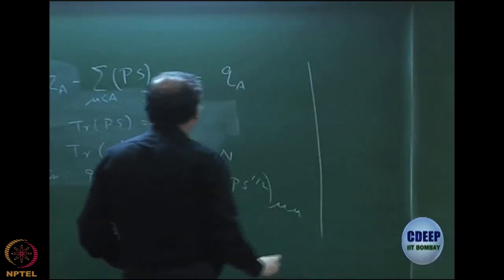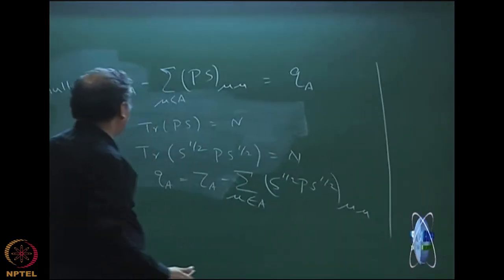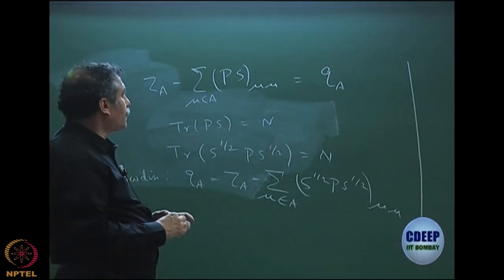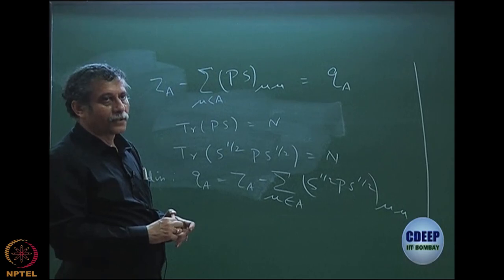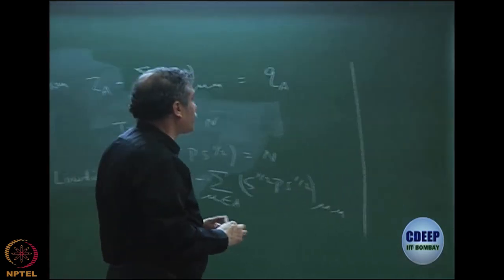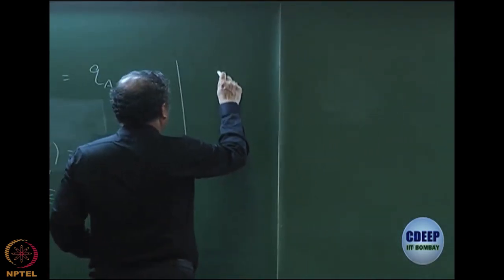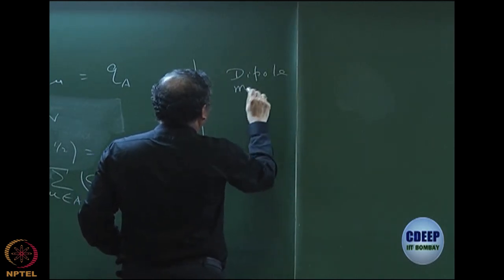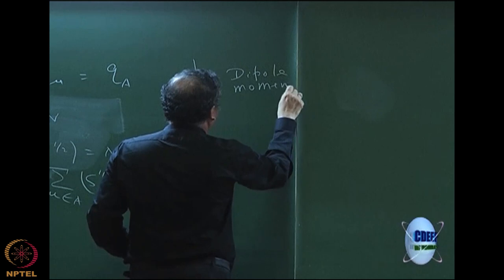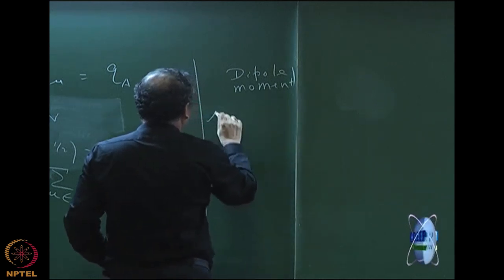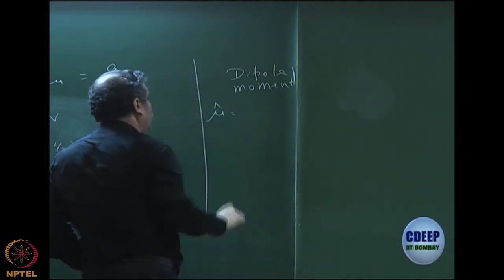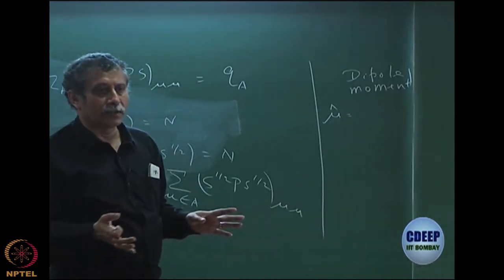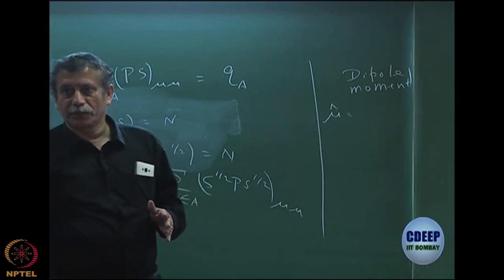Let us go ahead and see how the density matrix and charge density bond order matrix can be used for certain other properties. One of the properties we are interested in is the dipole moment, which is a useful property. The dipole moment is actually an operator that has two parts: one is a nuclear contribution and one is an electronic contribution.